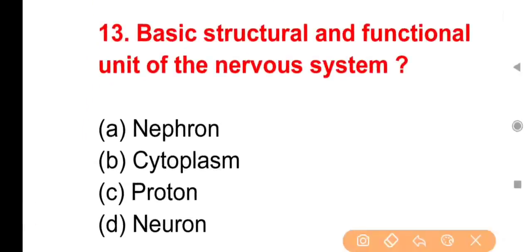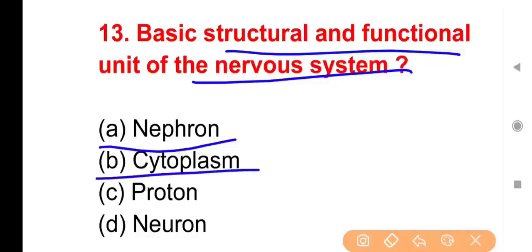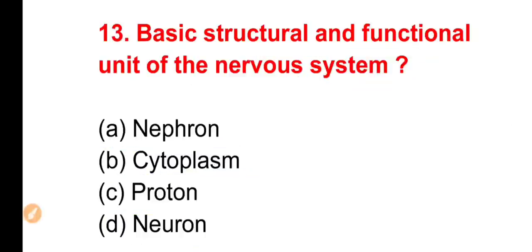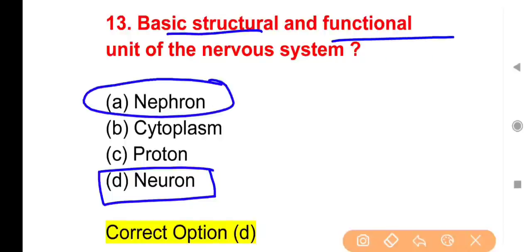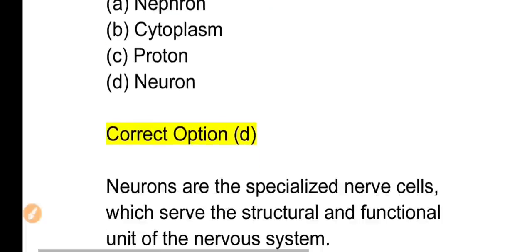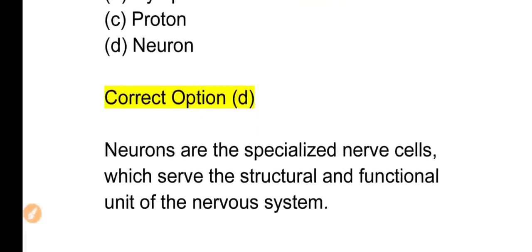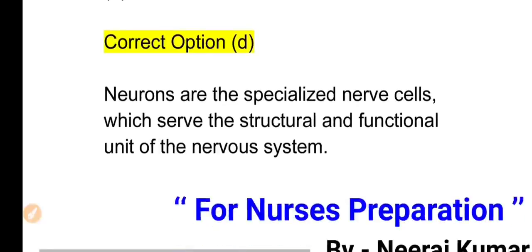Question 13: The basic structural and functional unit of the nervous system — Options: Nephron, Cytoplasm, Proton, Neuron. The right answer is Option D — Neuron. Neurons are the structural and functional unit of the nervous system. Note: Nephron is the unit of the kidney, and the cell is the unit of the human body.